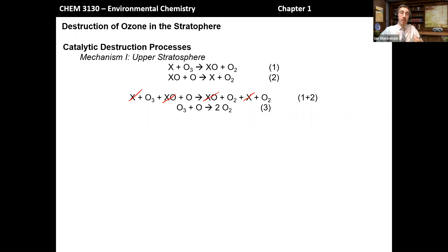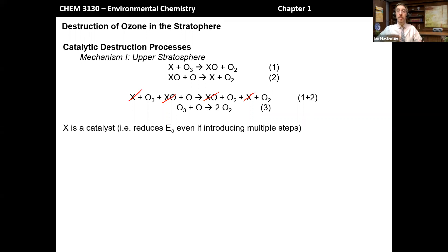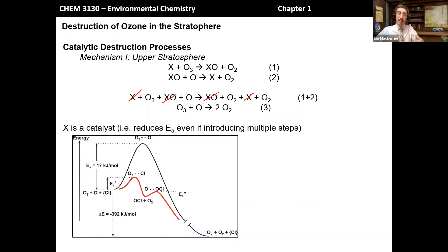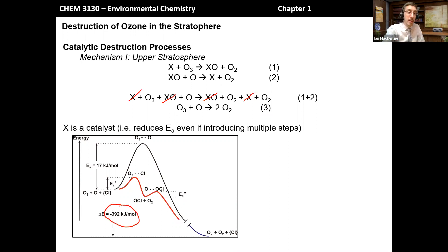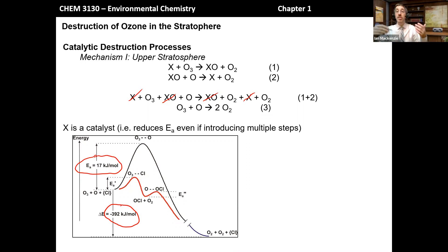For X to be a catalyst, in addition to participating without being consumed, it must also reduce the activation energy barrier — even if it introduces multiple steps into the reaction, it lowers the kinetic barrier. We can illustrate this with an energy coordinate diagram: the black trace is the uncatalyzed reaction, where O3 reacts with a single oxygen atom to form two molecules of O2. This is very exothermic at negative 392 kilojoules per mole, but it's not kinetically favored because of the large activation energy barrier of 17 kilojoules per mole, making it a slow reaction.